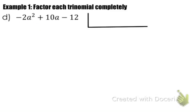So let's write our little box and write down all of our terms. So we have negative 2a squared plus 10a, negative 12.